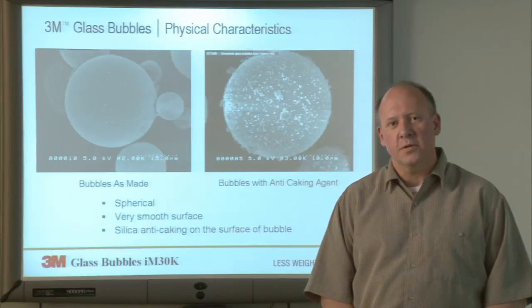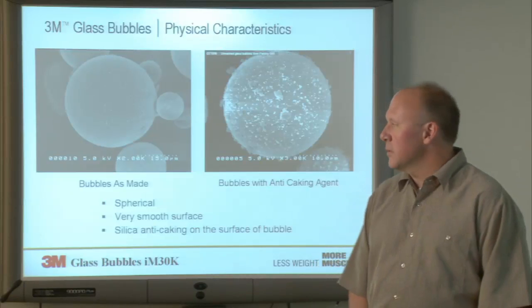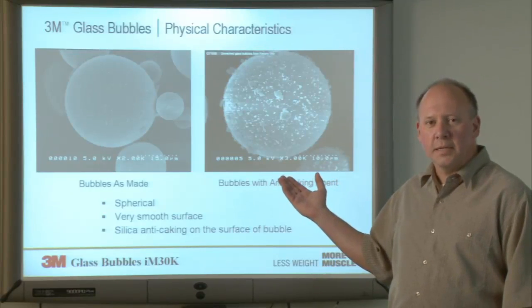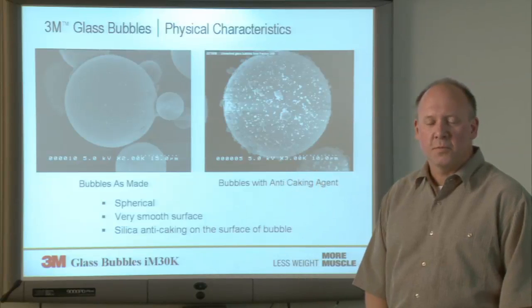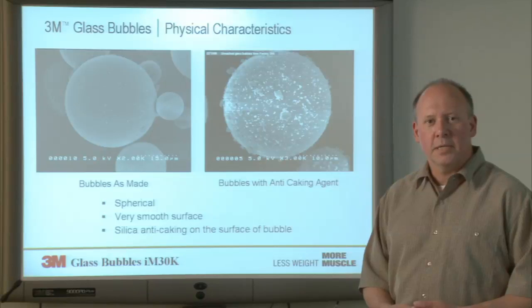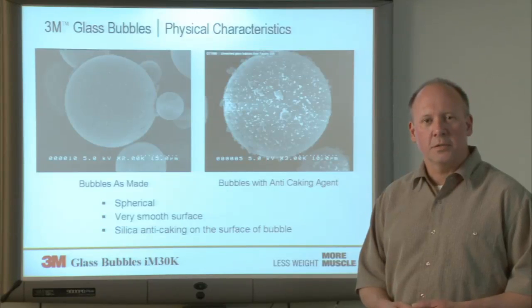They're smooth, spherical particles, and they're hollow, so they're low in density. The picture on the right shows the glass bubble that exits our plant, and as you would receive as a customer of 3M, it has an anti-caking agent on the surface. This material prevents the bubbles from agglomerating during transit and potentially agglomerating if they're exposed to moisture in the package.